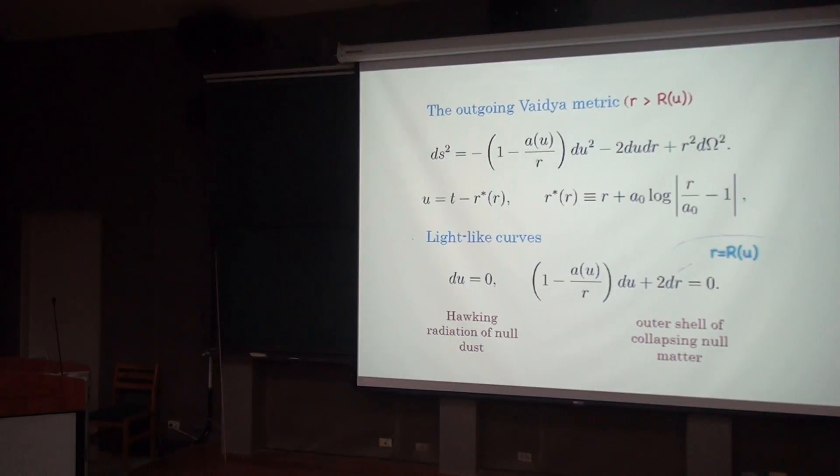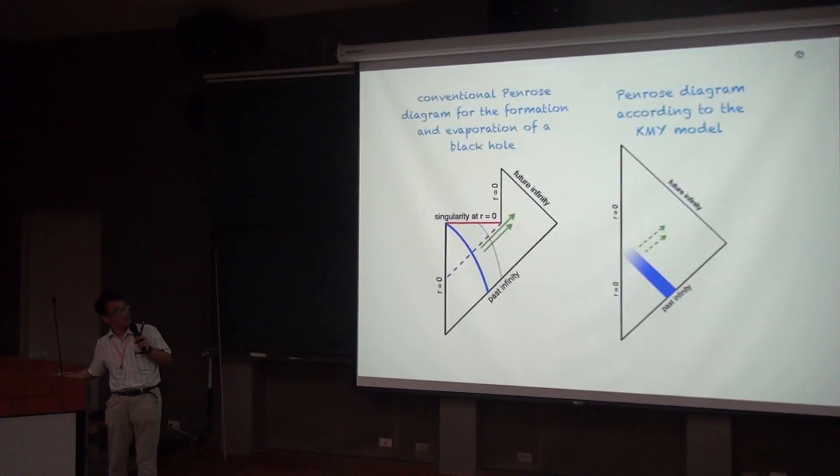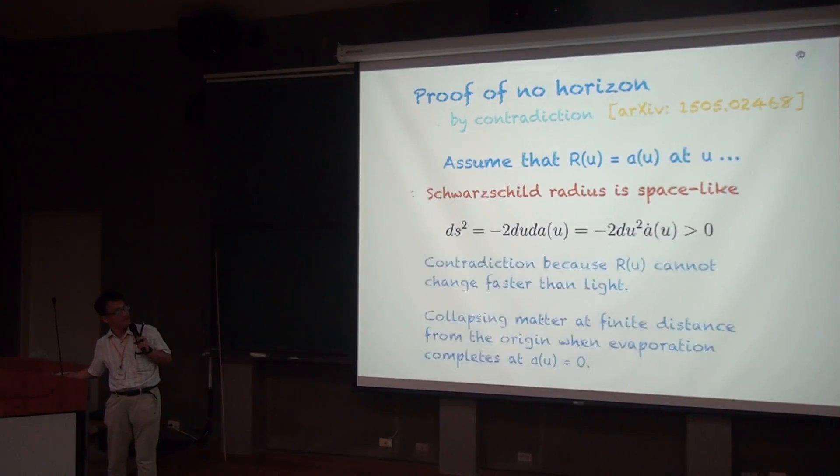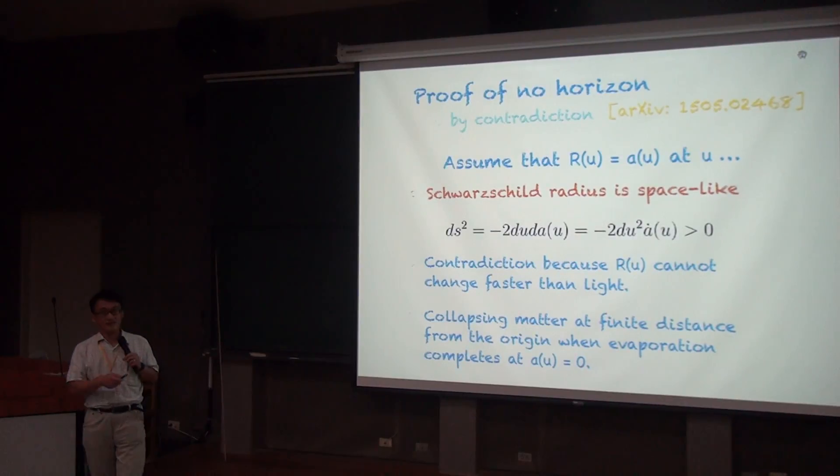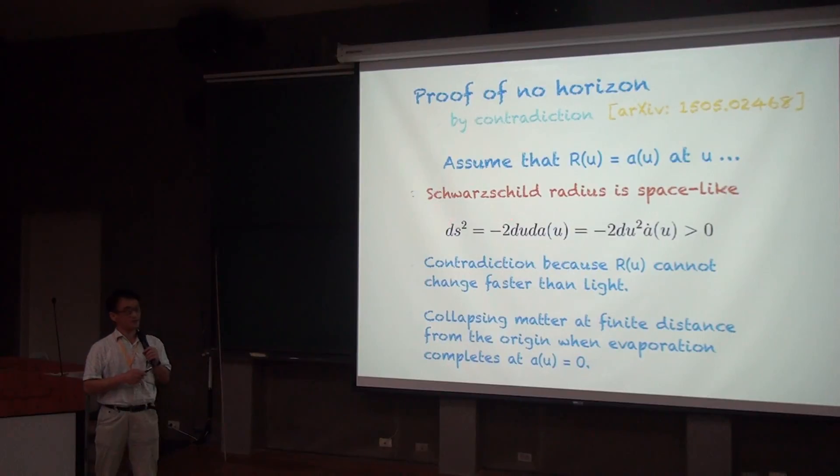So in the argument that you gave in the next couple of slides, I didn't quite follow the first equality. So here I'm using the outgoing Vaidya metric and plugging R equal to A, this function of U. And then the first term of the outgoing Vaidya metric vanishes.